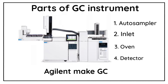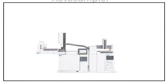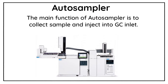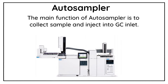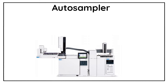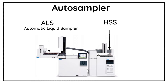Now let us know a little bit more about these parts. Firstly we will talk about the auto sampler. The main function of the auto sampler is to collect the sample from the sample vial and inject it into the GC inlet. Generally a GC instrument comes with two types of auto samplers: ALS and HSS. ALS means Automatic Liquid Sampler and HSS means Headspace Sampler.